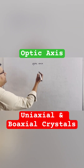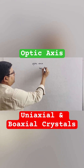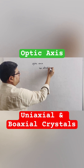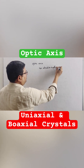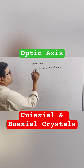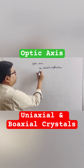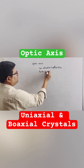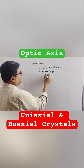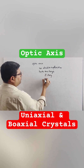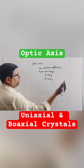Optic axis is a direction along which there is no double refraction. Or we can say, optic axis is a direction along which both the rays — e-ray and o-ray — travel with the same velocity.